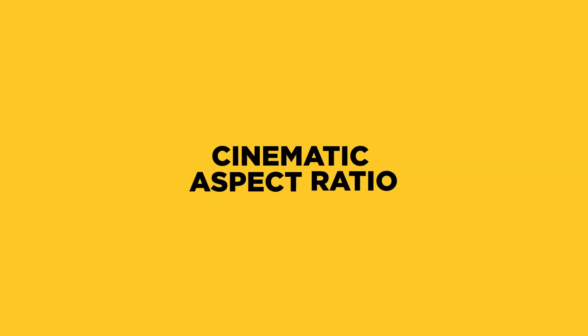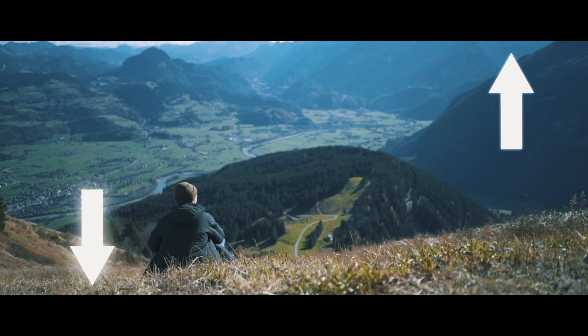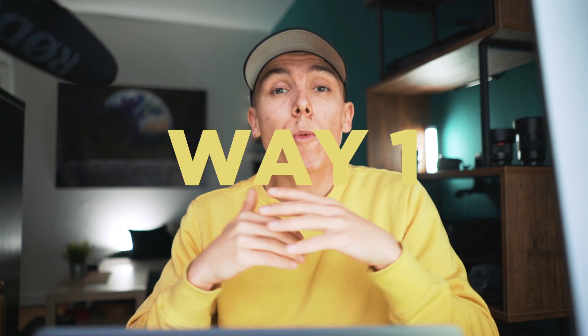Hello everybody and welcome to the channel. My name is Peter and in today's tutorial I'm going to show you three ways how to create a cinematic aspect ratio, or in other words cinematic black bars. Two of these ways are actually wrong, so make sure to keep watching till the end and I'll show you why.